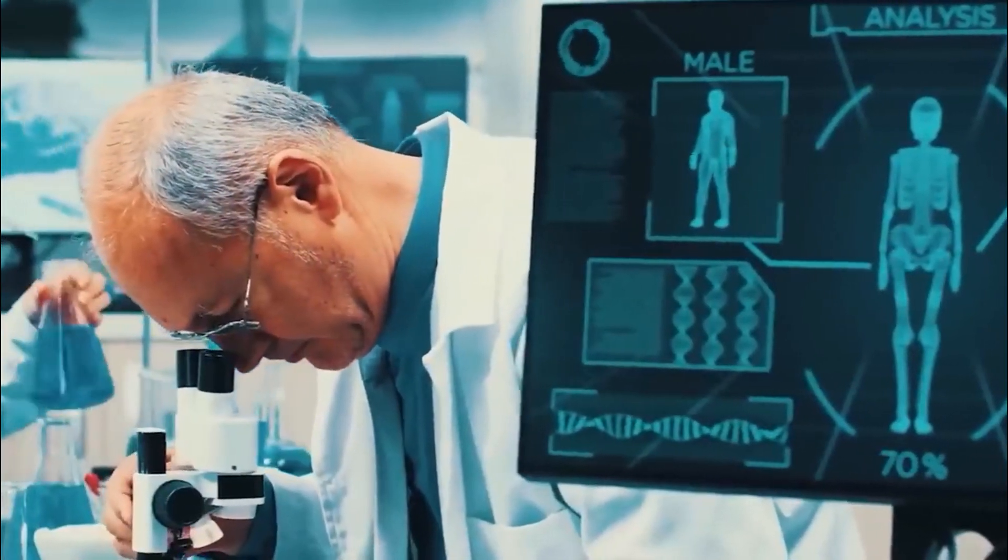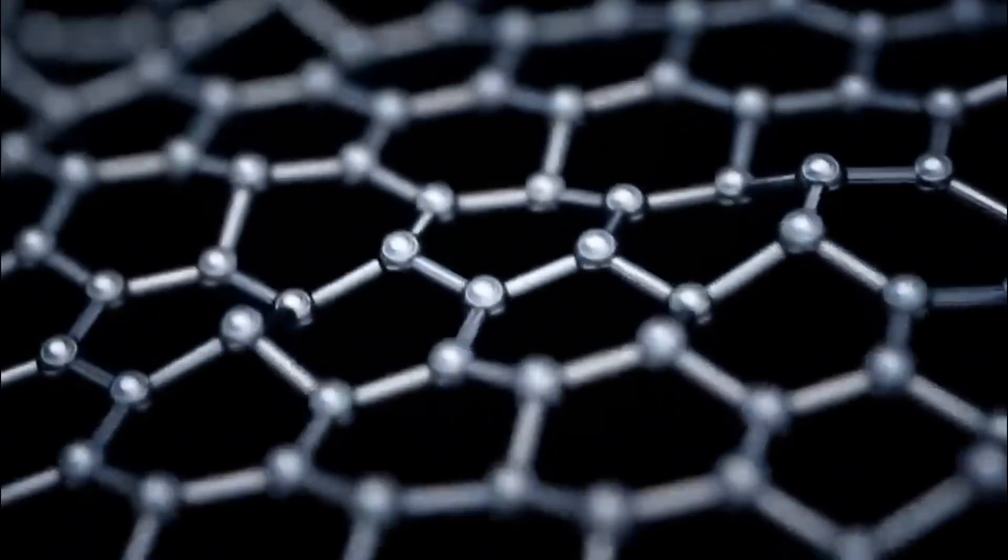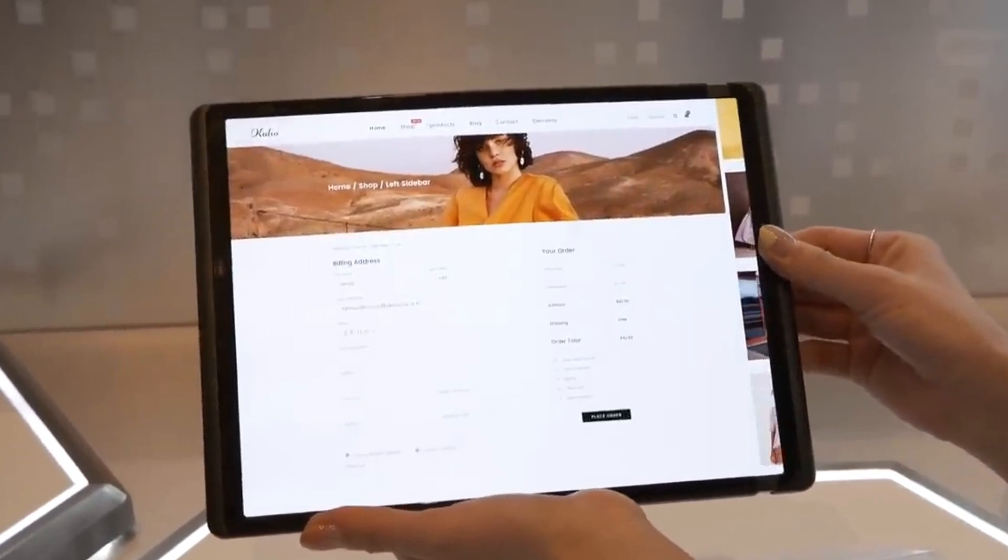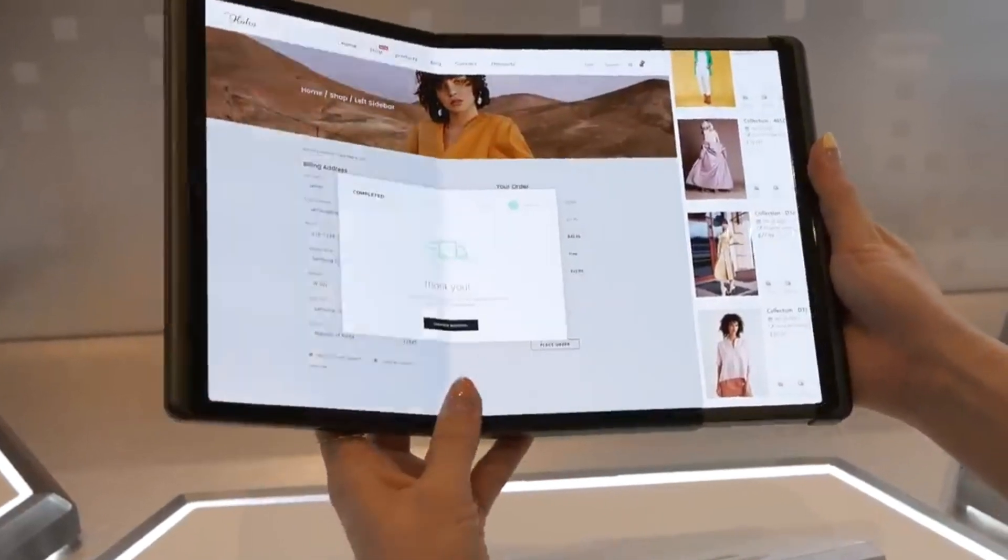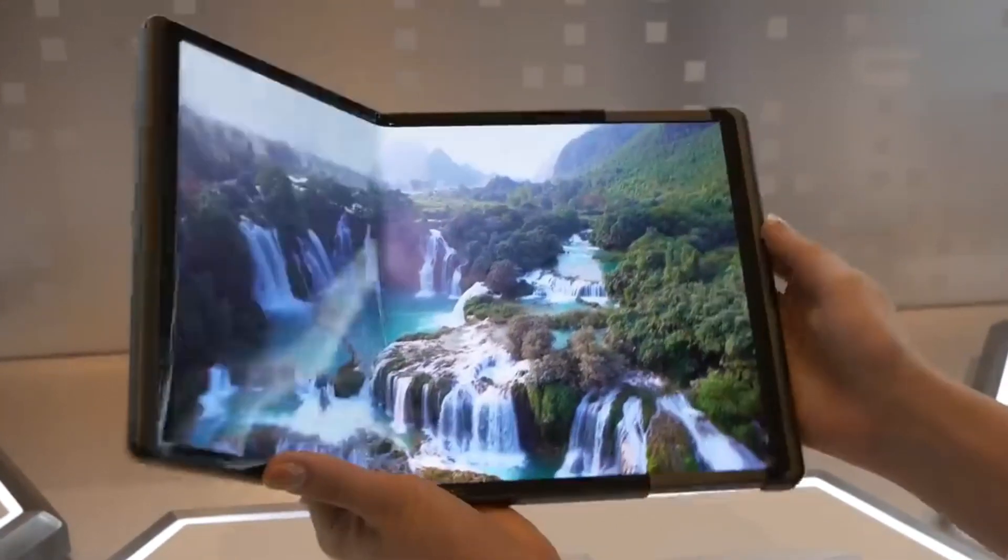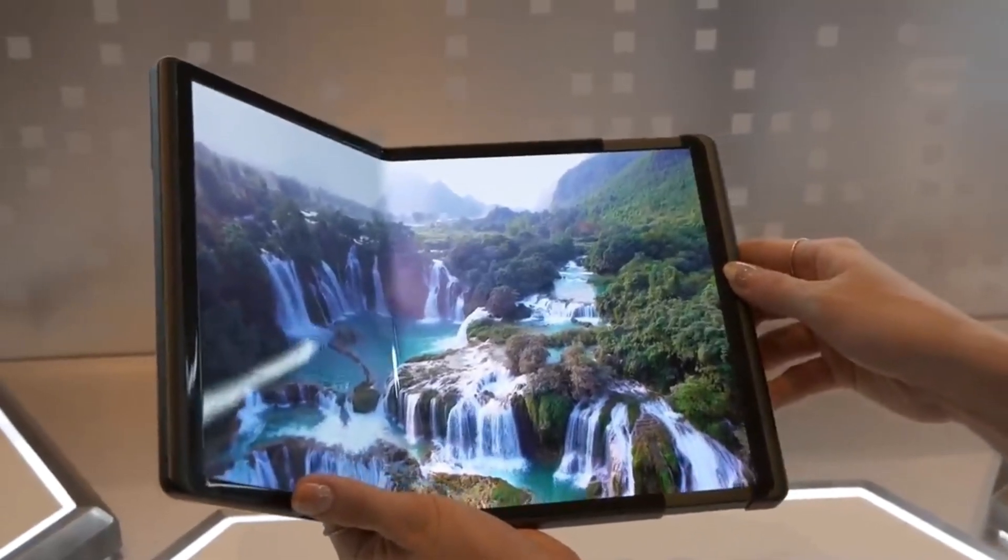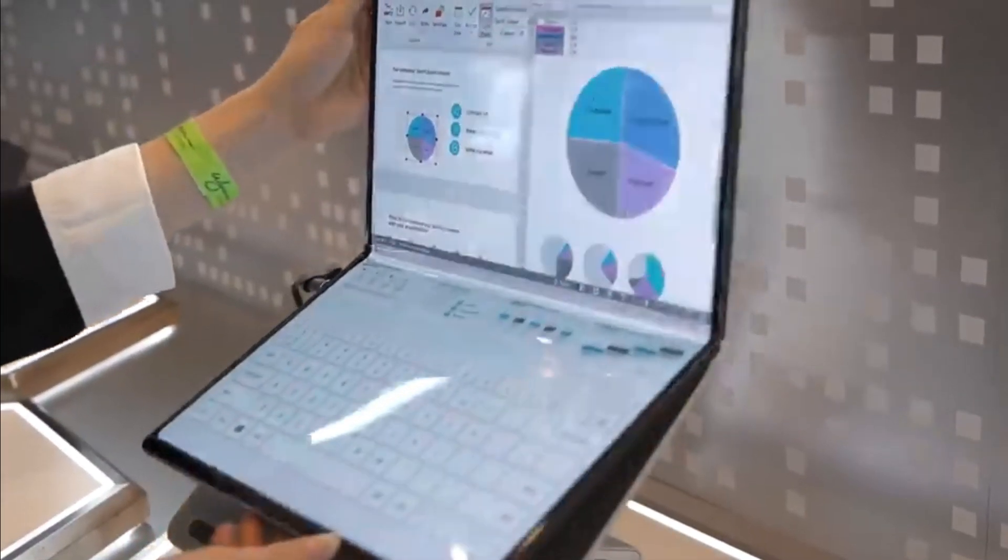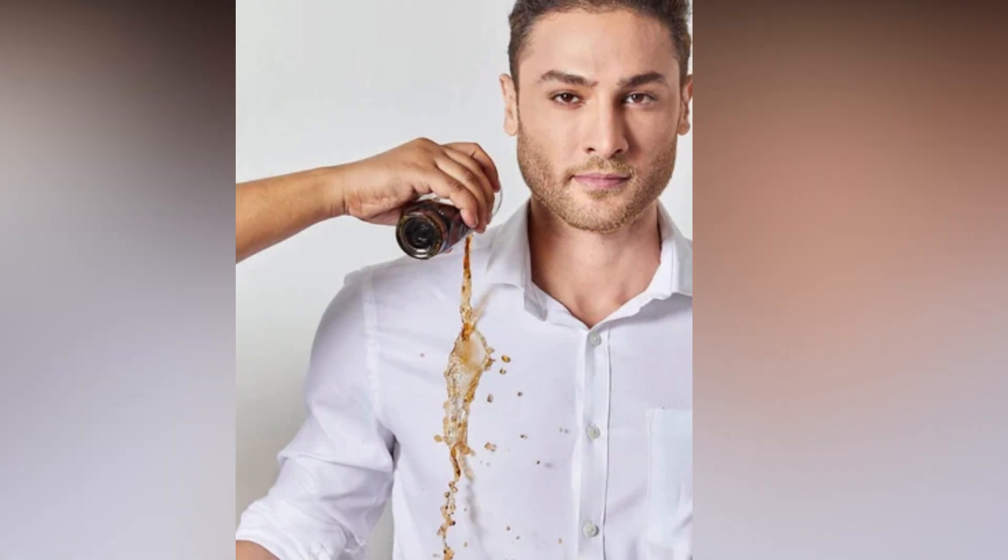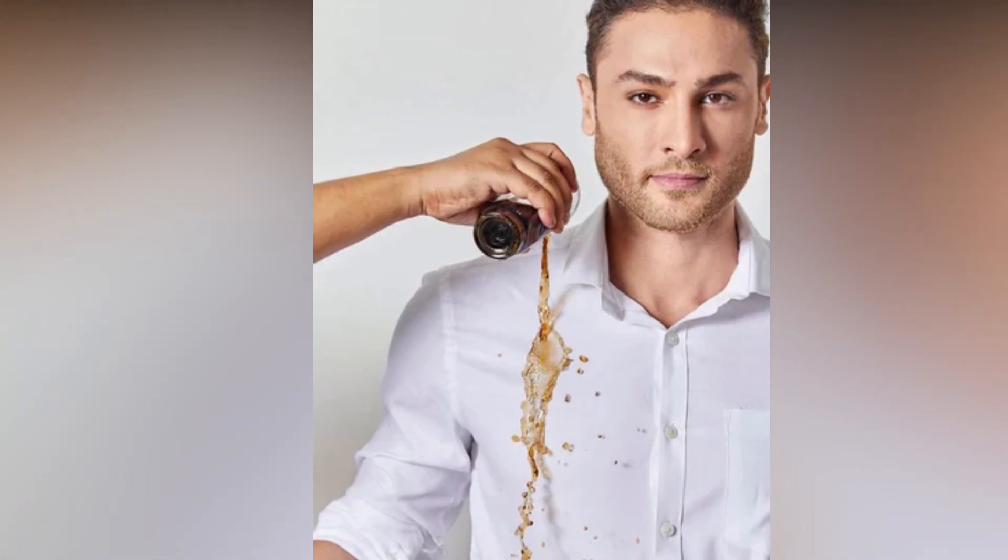So as we step into 2024, brace yourself for a wave of innovations that will transform everyday experiences. Picture this: foldable screens that make your devices more versatile and portable, allowing you to seamlessly adapt technology to your needs. Better batteries mean longer-lasting power for your gadgets, reducing the hassle of frequent recharging and contributing to a more sustainable tech landscape. But it doesn't stop there. Get ready for fabrics that defy the elements, water-repellent and self-cleaning materials that make spills and stains a thing of the past. Imagine enjoying your morning coffee without worrying about accidental spills on your shirt. It's as simple as a quick slide-off, thanks to advancements in nanotechnology and materials science.